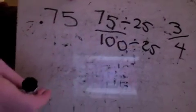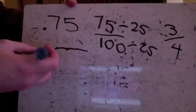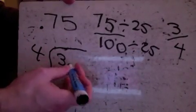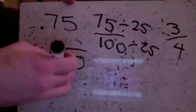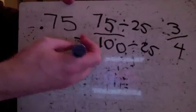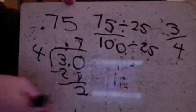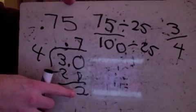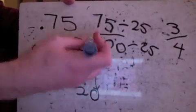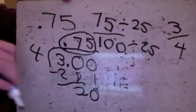To verify three-fourths, I divide three by four. I set up the division, put my decimal point and zero after the three, and bring the decimal point straight up. Four doesn't go into three, so four goes into thirty seven times. Seven times four is twenty-eight; subtract to get two. Add another zero — four goes into twenty five times with nothing left over, giving back 0.75, or seventy-five hundredths.